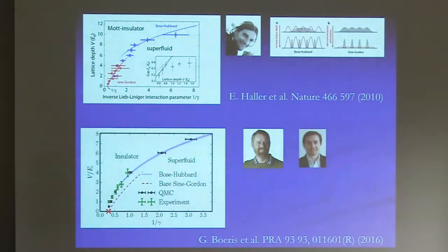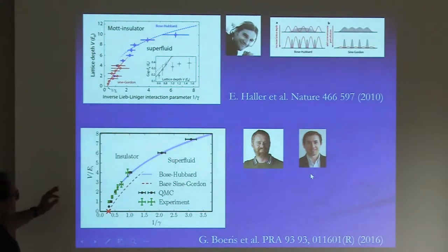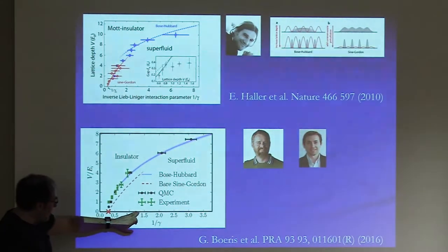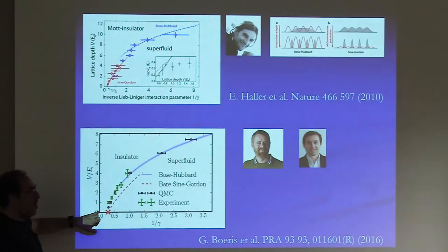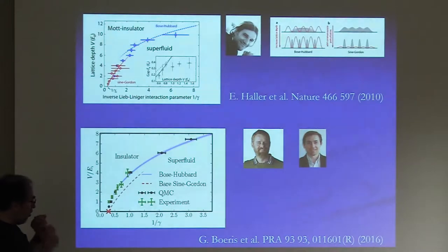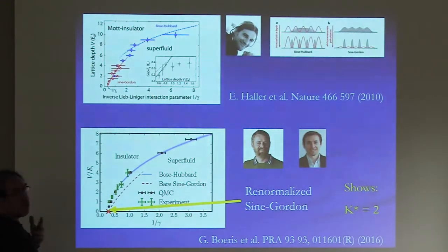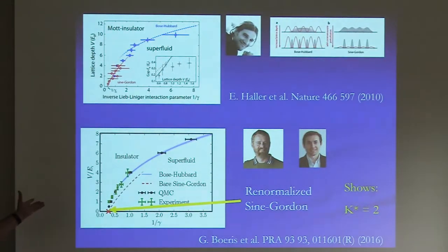More recent experiments done by the group of Giovanni Modugno in Florence — with theoretical analysis done together with Laurent Sanchez-Palencia's group from Institut d'Optique — allowed a very precise determination of the critical value as the lattice strength goes to zero. The system is a superfluid before the critical value, and beyond it becomes a commensurate (Mott) phase. Reconverting into the Luttinger parameter gives the transition exactly where expected: at K=2. This is a beautiful test of the BKT transition, showing the universal value of K at the transition.